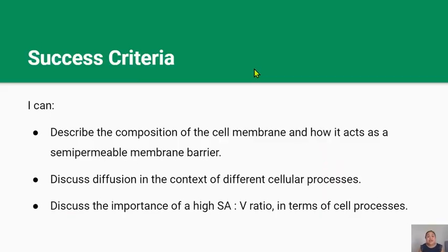Ka pai — you've reached the end of this lesson. By now you should be able to describe the composition of the cell membrane and how it acts as a semi-permeable barrier, discuss diffusion in the context of different cellular processes, and discuss the importance of a high surface area to volume ratio in terms of cell processes. Thanks for watching and I'll see you in the next video.